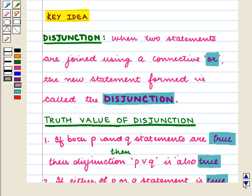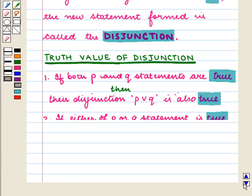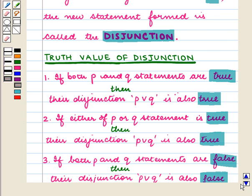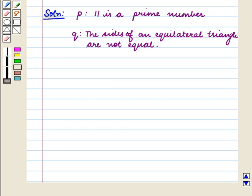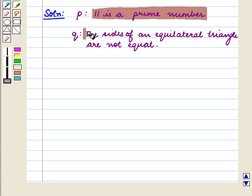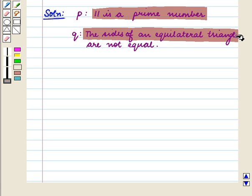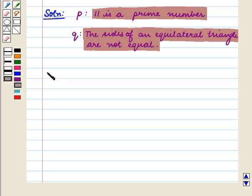With this key idea, let us proceed with the solution. We are given the following statements: P is '11 is a prime number' and Q is 'the sides of an equilateral triangle are not equal.' We first write the disjunction P or Q.